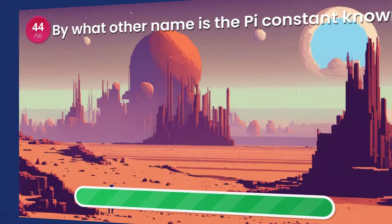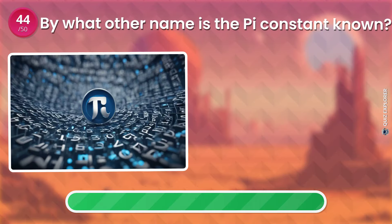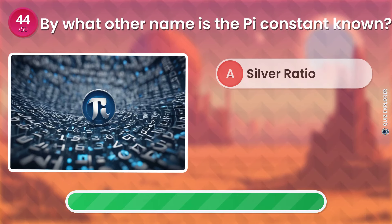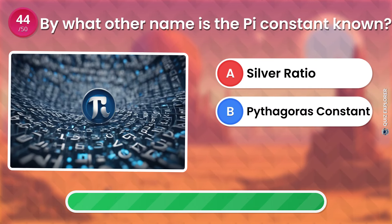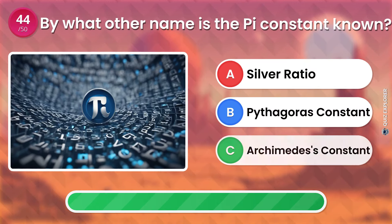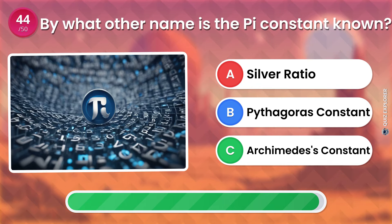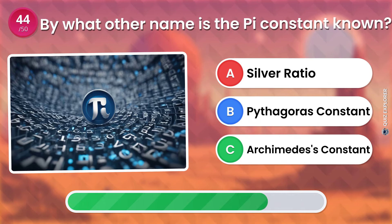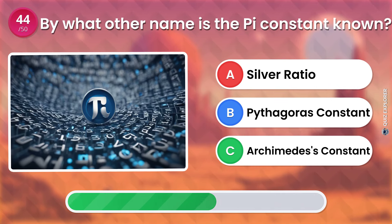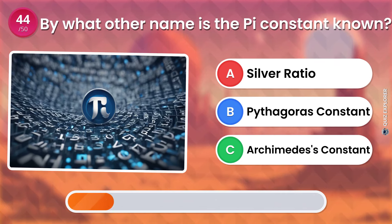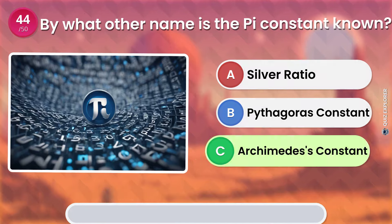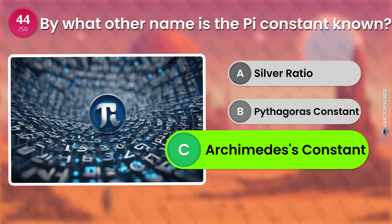By what other name is the pi constant known? Silver ratio. Pythagoras constant. Archimedes's constant. The answer is: Archimedes's constant.